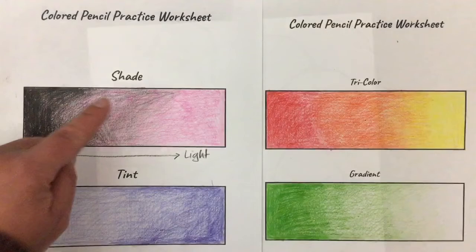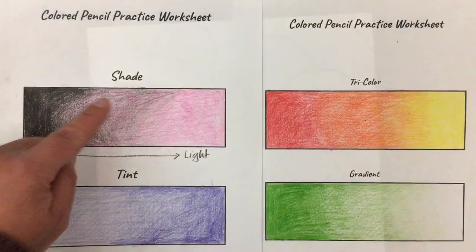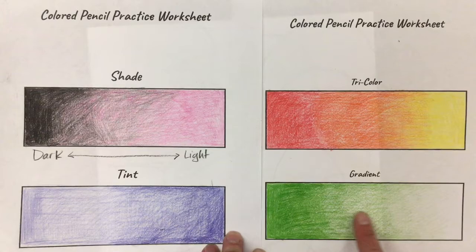Okay, so once you get your design, you're going to refer back to the different color theories we learned. We learned about shade, tint, tricolor, where we had three different colors, and gradient.